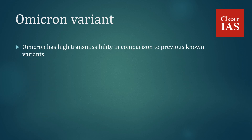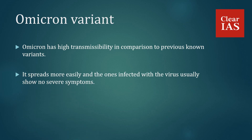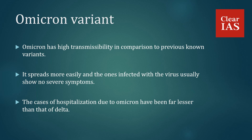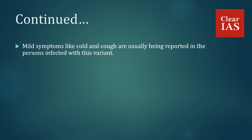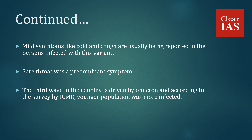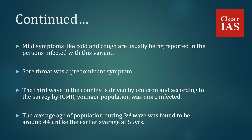Omicron Variant. Omicron has high transmissibility in comparison to previous known variants. It spreads more easily and those infected usually show no severe symptoms. Cases of hospitalization due to Omicron have been far fewer than those of Delta, which was responsible for the second wave in India. Mild symptoms like cold and cough are usually reported, with sore throat being a predominant symptom. The third wave in the country was driven by Omicron and, according to a survey by ICMR — the Indian Council of Medical Research — the younger population was more infected. The average age during the third wave was found to be around 44, unlike the earlier average of 55 years.